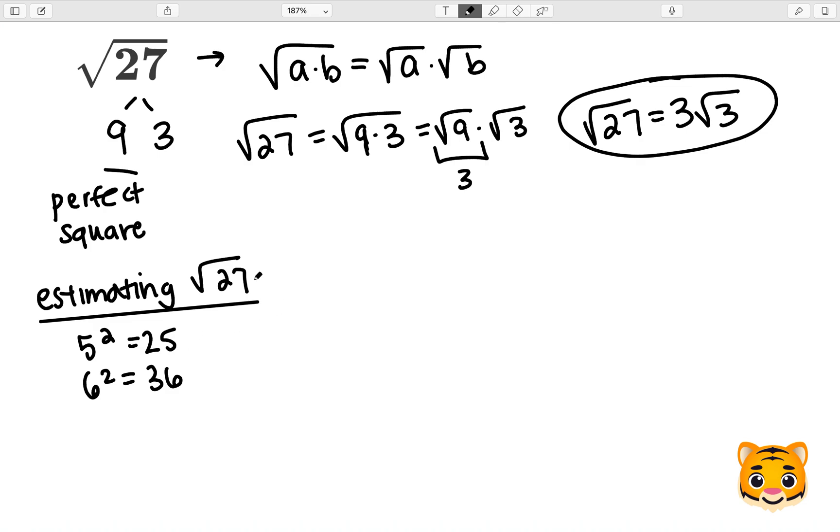As you can see, 27 lies between 25 and 36, so we can write the inequality: square root of 25 is less than the square root of 27, which is less than the square root of 36.